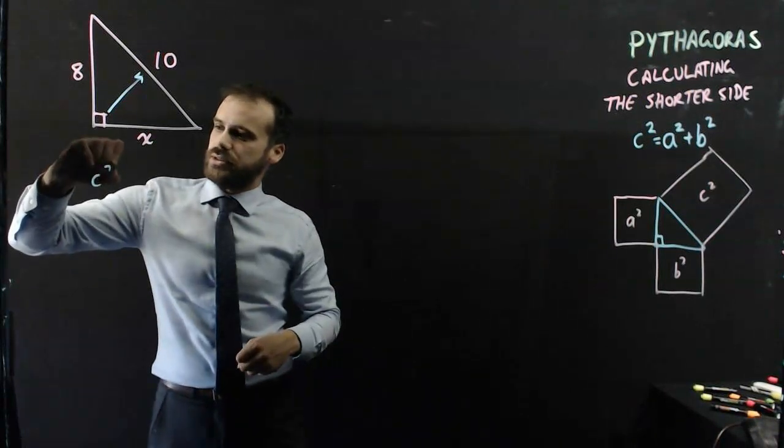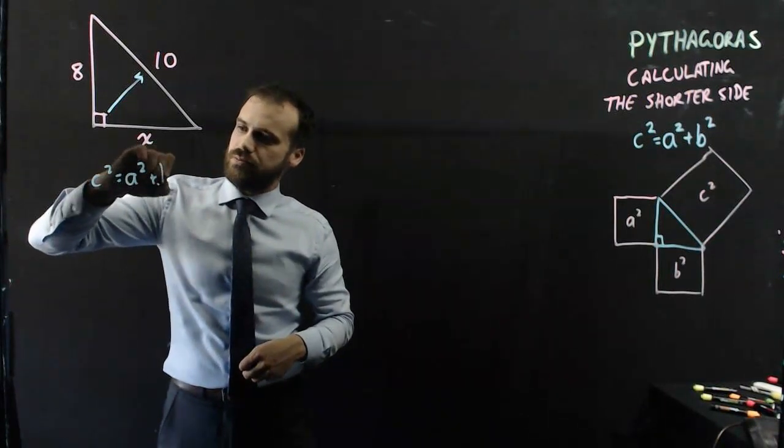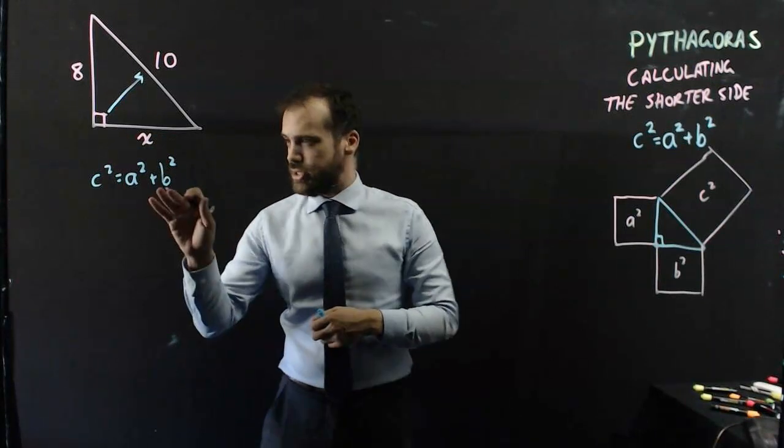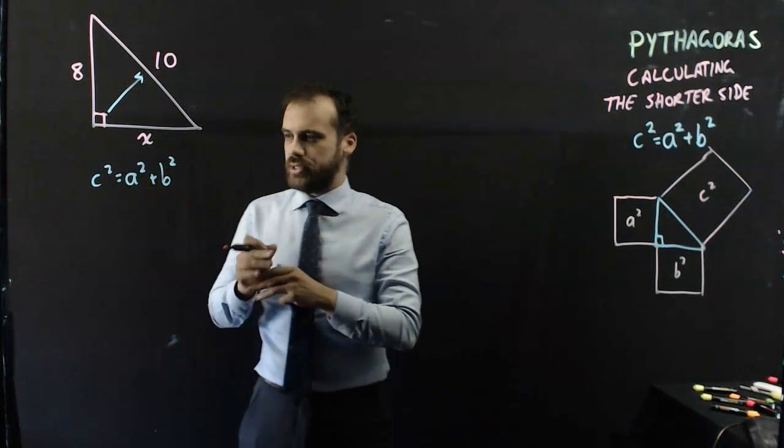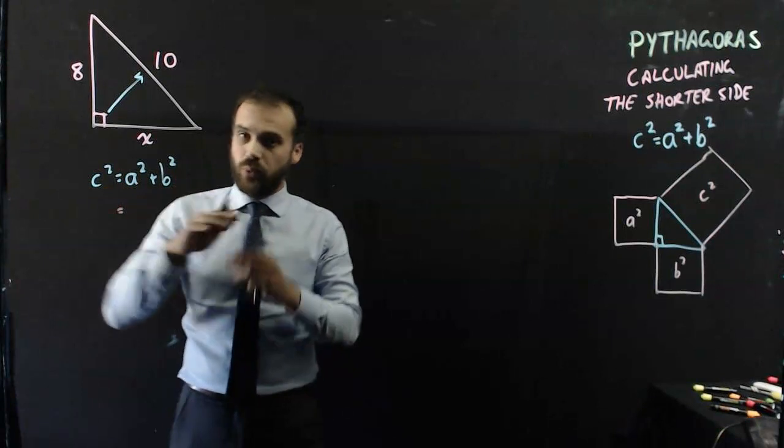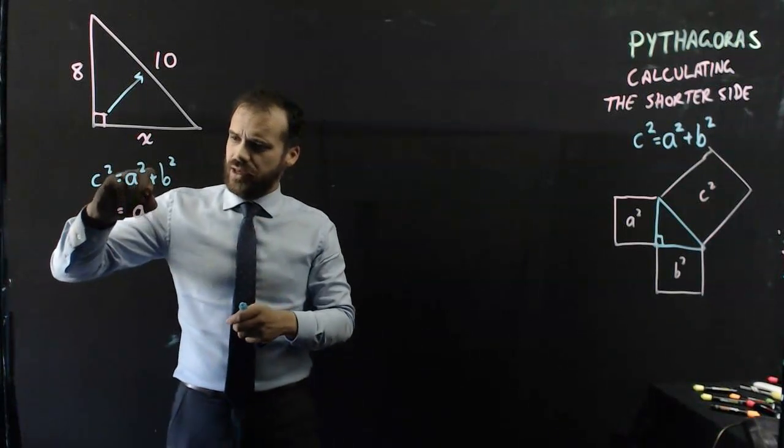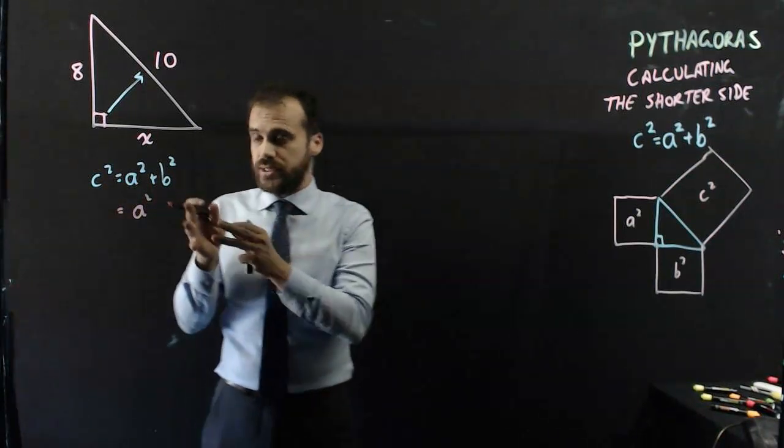We have a formula, c squared is equal to a squared plus b squared. And now I'm going to rearrange it to make a the subject, put a by itself. Alright, so the way I'm going to do that is just leaving a there, so a squared stays, and then subtract b squared from both sides.